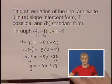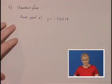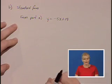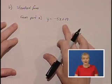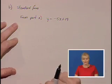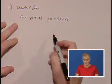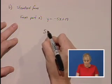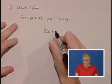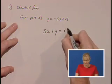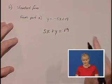We'd like to write this in standard form. So from our part A, standard form will be if we have both x and y on the same side of the equation. So we're going to add 5x to both sides and we'll have 5x plus y equals 19. So we have standard form.